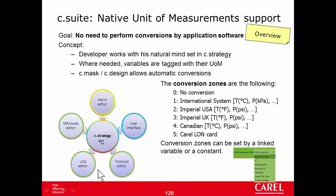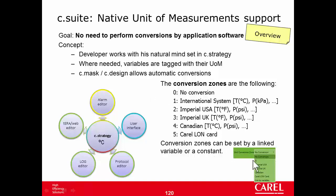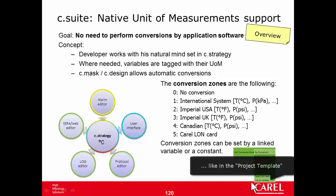In all scopes where a variable can be used — the user interface, protocols, slaves, logs, TerraWeb, and alarms — it is possible to select the current conversion zone. Like most properties, this can be a constant, meaning always SI or always Imperial USA, or linked to a variable, which allows changing the conversion zone at runtime.